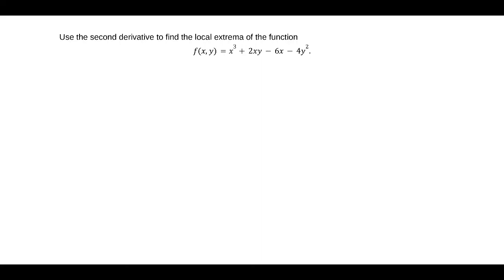Let's begin by finding fx, the partial of f with respect to x, which is 3x squared plus 2y minus 6, and also fy, the partial of f with respect to y, which is 2x minus 8y.